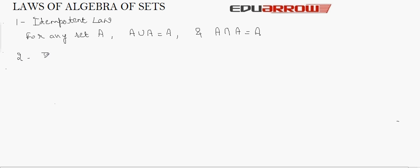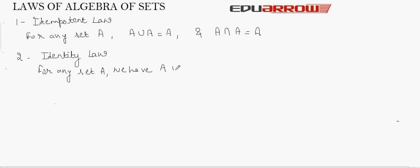The second law is the Identity law. This law says that for any set A, A union phi is equal to A and A intersection U is equal to A. That is, if we do an intersection of a universal set with any given set, the resultant set will be the given set only. And if we union a null set with a given set, the resultant set will be equal to A.